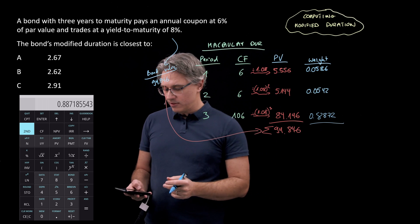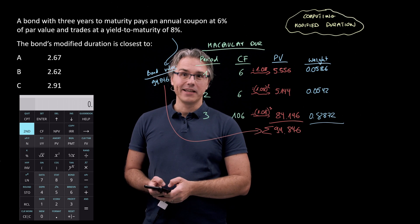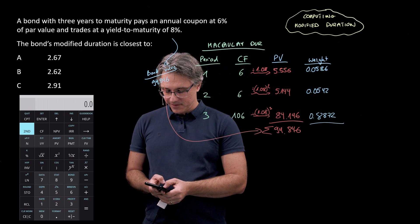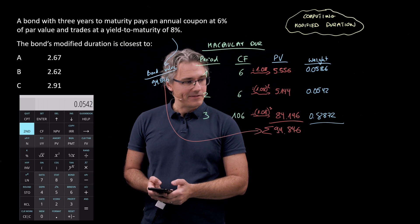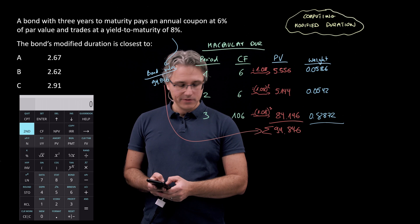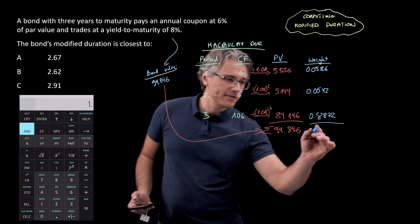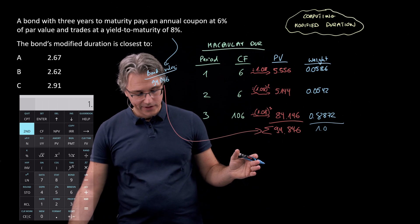And I think if we add all of these weights up, just to check whether we get the expected results, 0.0586 plus 0.0542 plus, as you can probably imagine, I'm hoping for a result equal to 1. But let's have a look. 0.8872. Yes. Perfectly equals 1, which means we've covered 100% of the bond's value.